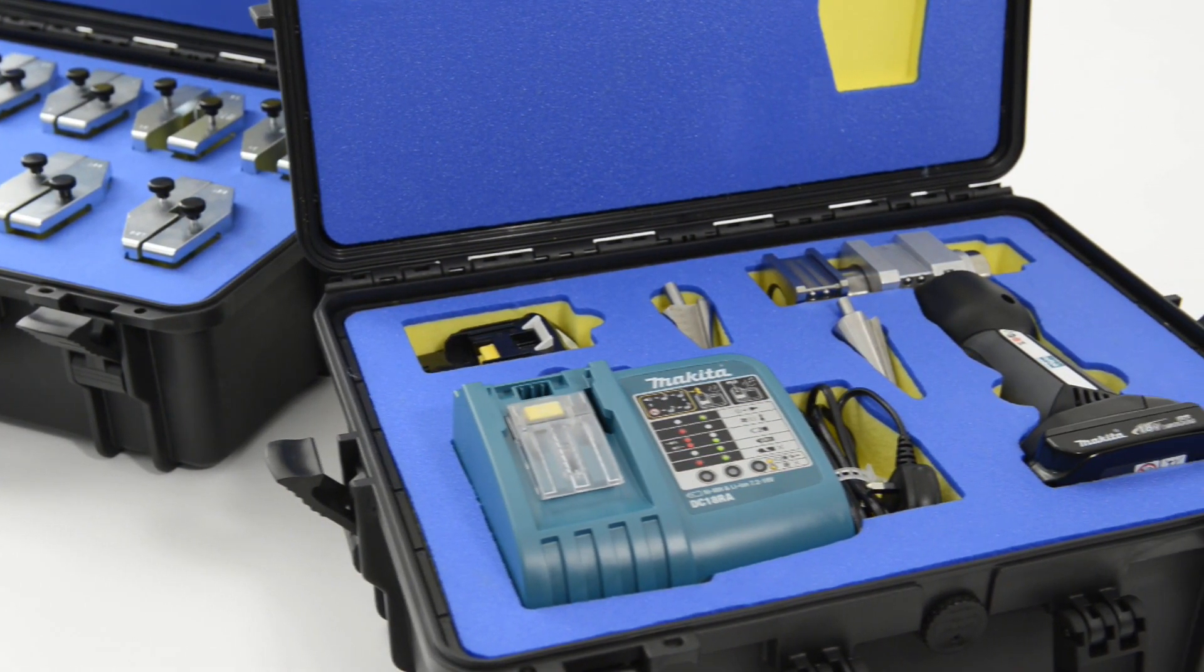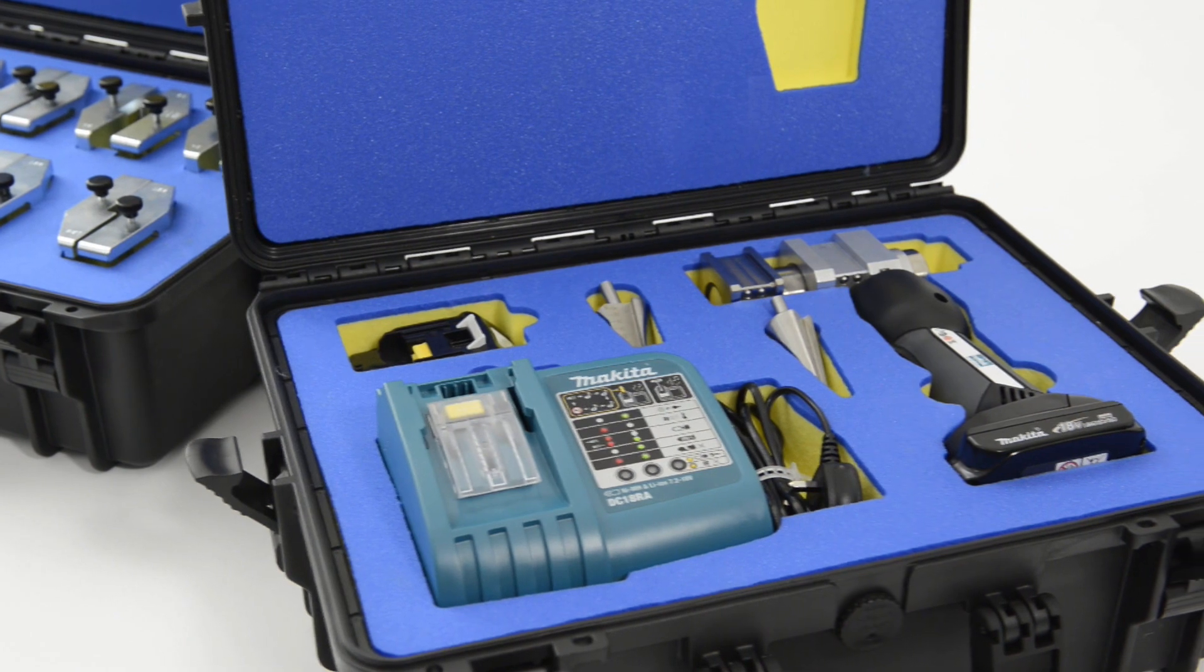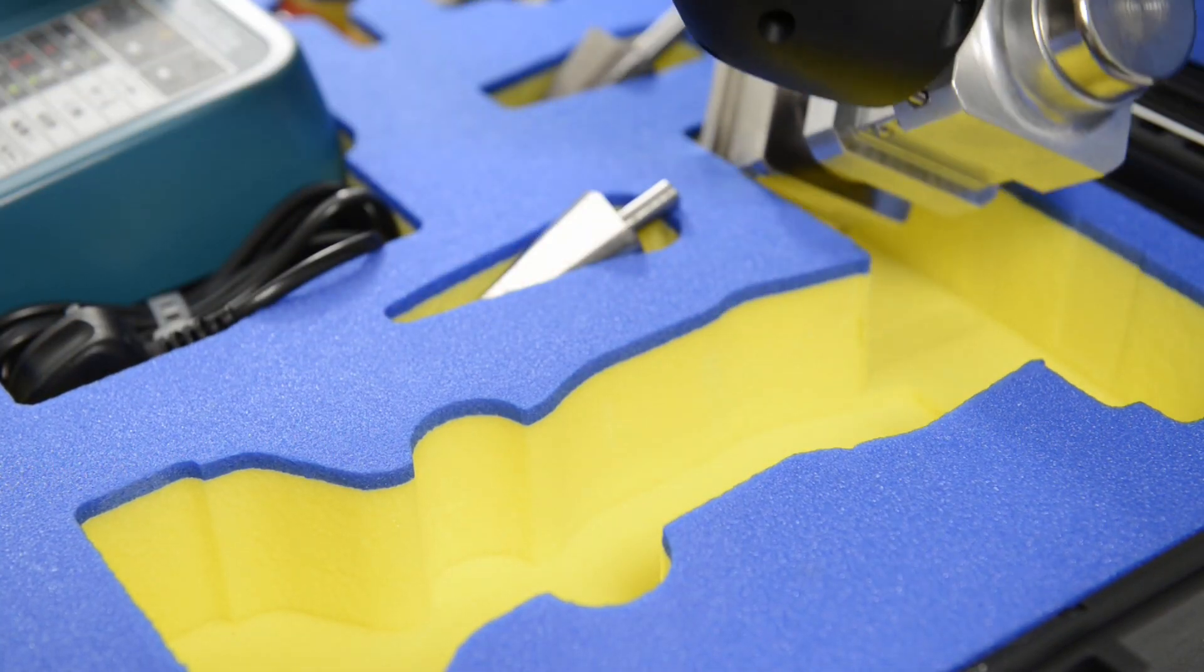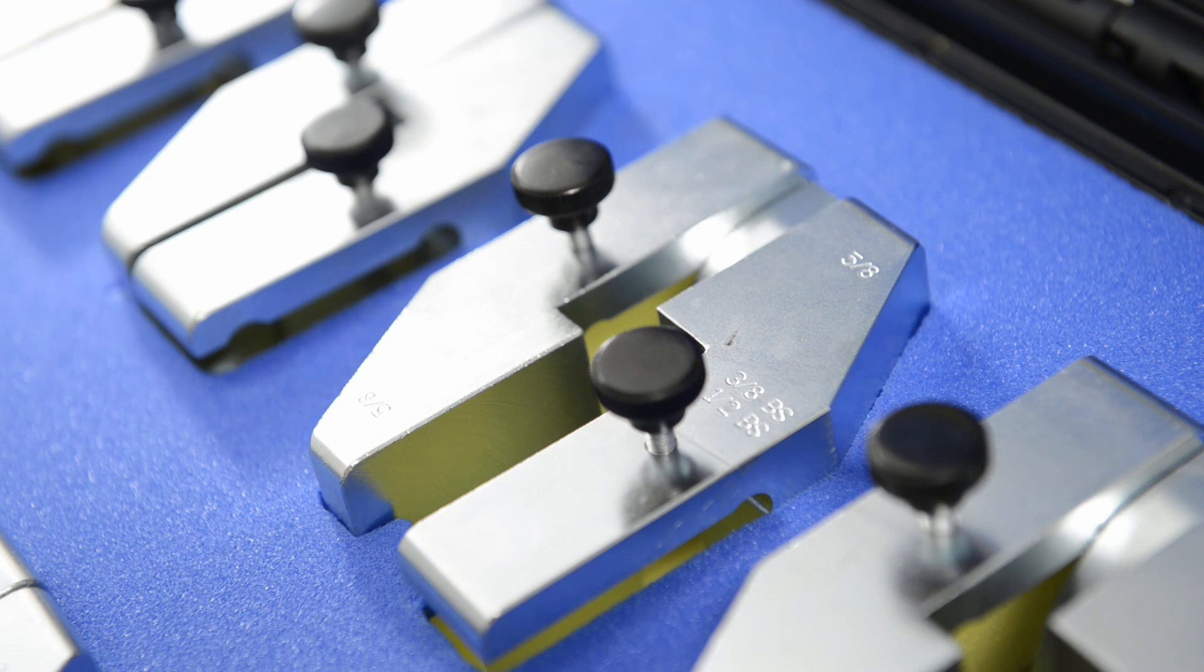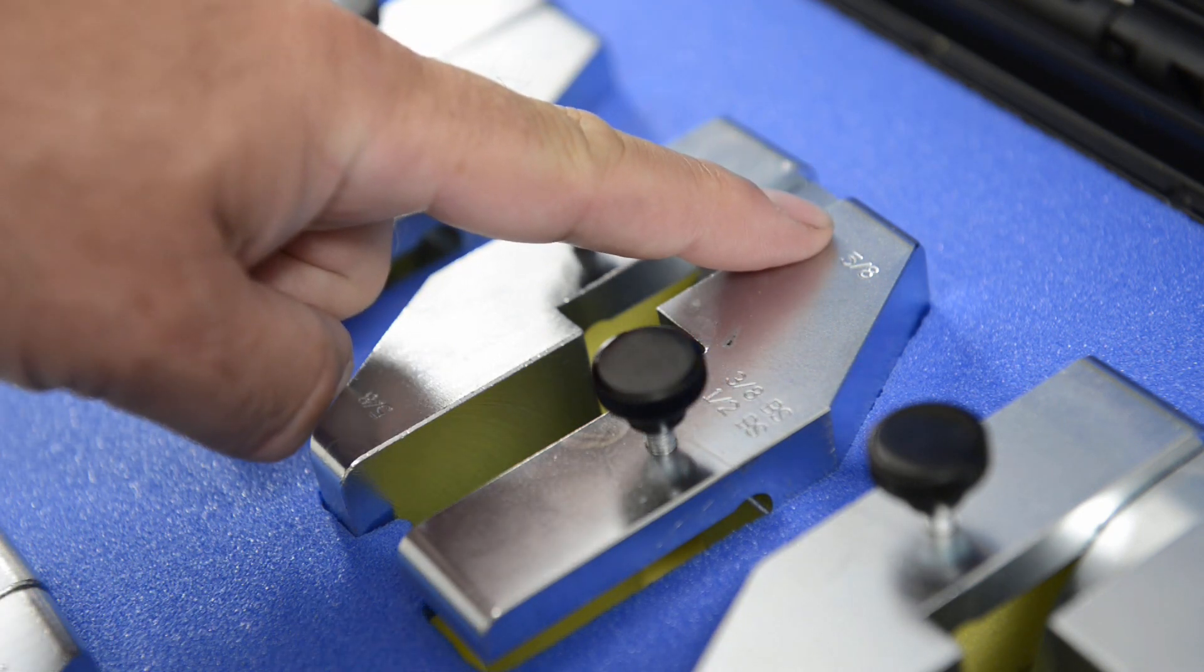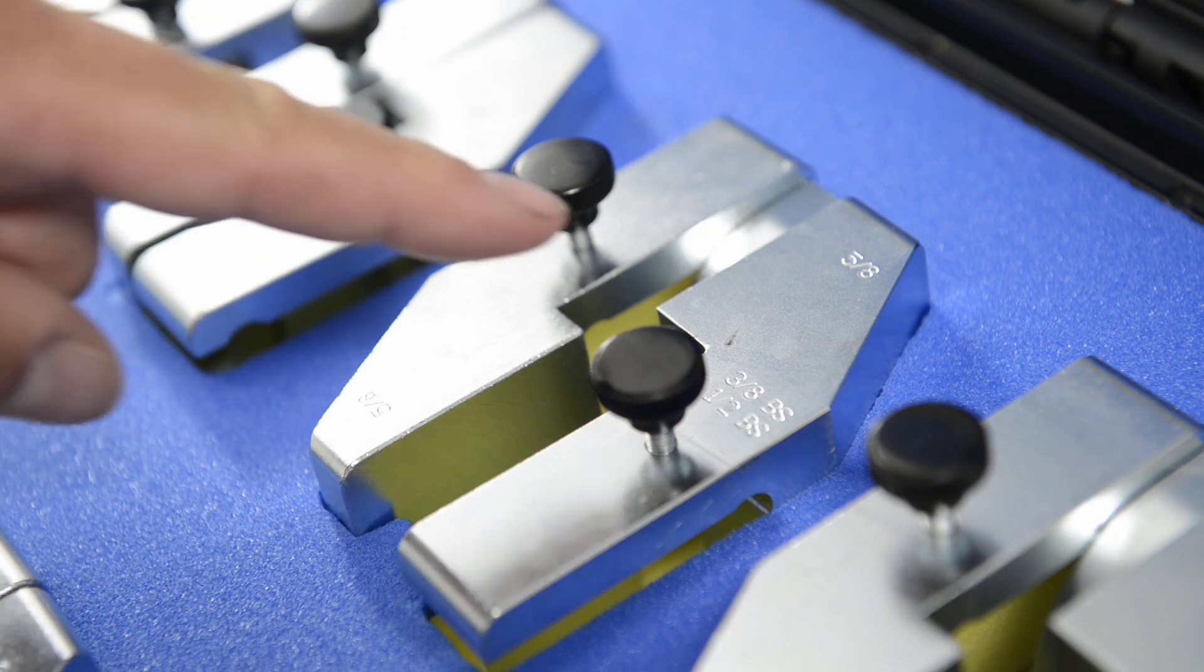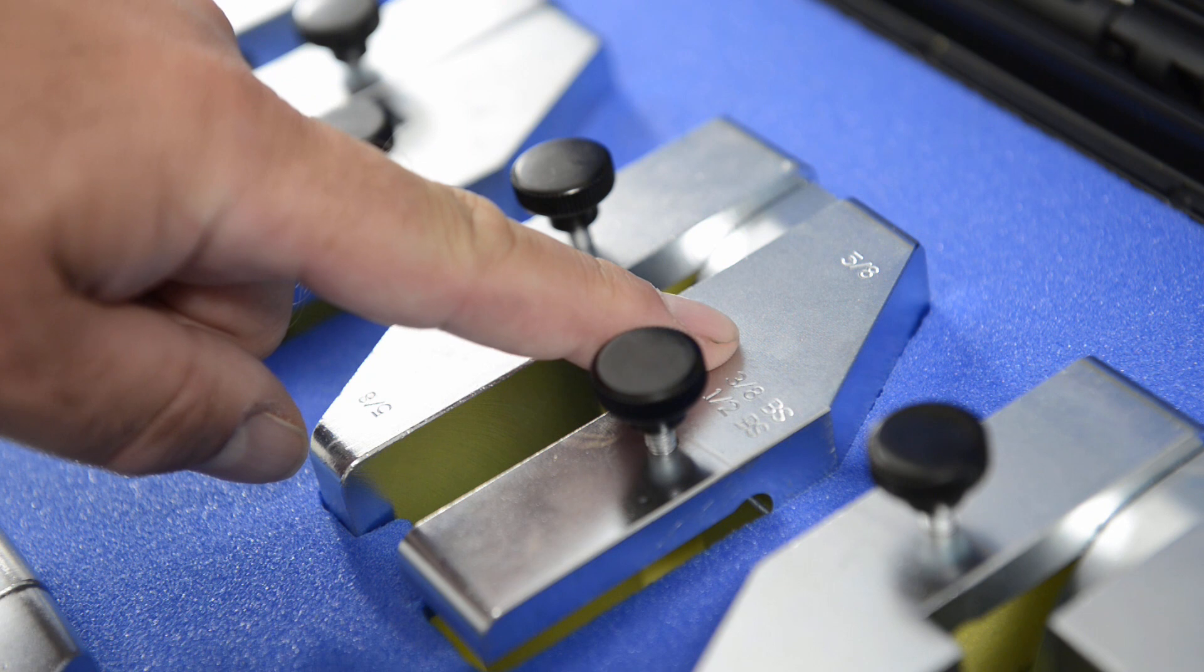First select the correct jaw set for the connection to be made. In this instance, five-eighths of an inch. The jaws are marked with the size stamped into the metal. Note that some jaws have two sizes shown on the casings. The size shown lower on the jaw is for when you're using the jaws to connect to a swaged connection.